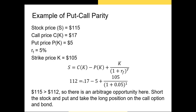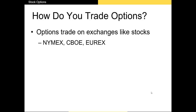Since the $112 calculated is less than the $115 stock price, assuming no trading costs there is an arbitrage opportunity. The way to profit is to short the stock — which is overpriced — and take the long position on the call option and bond, and the short position on the put. These three assets together form a synthetic stock that should eventually equal the actual stock price, allowing you to profit from the difference.